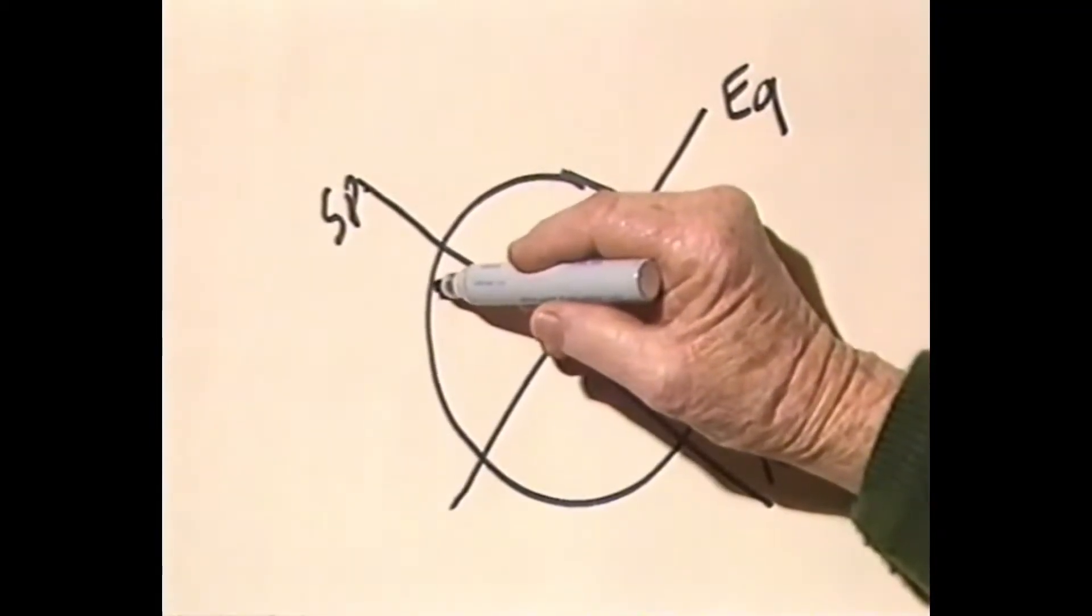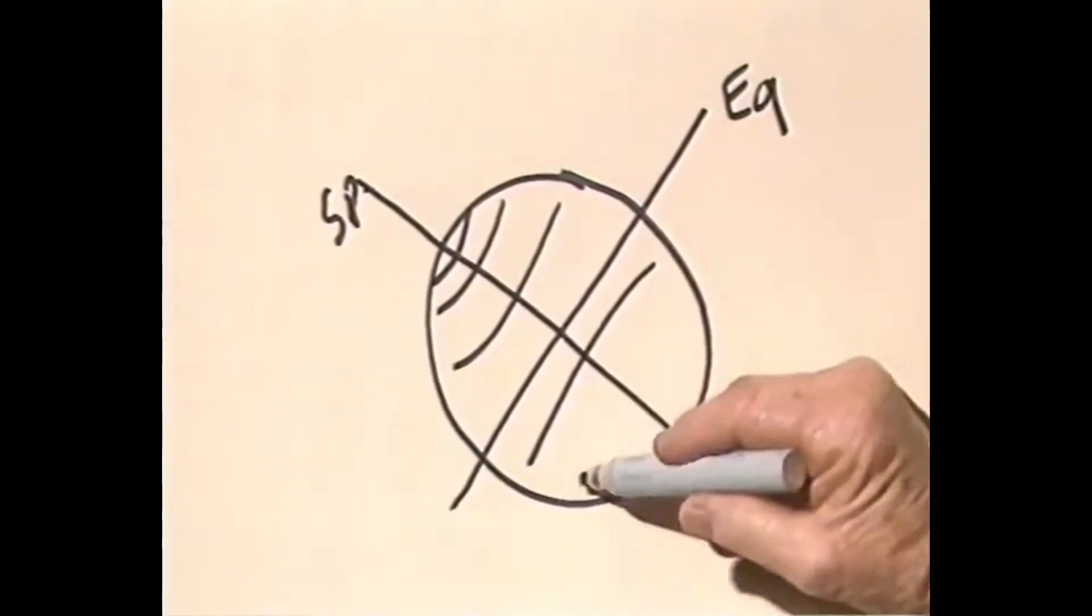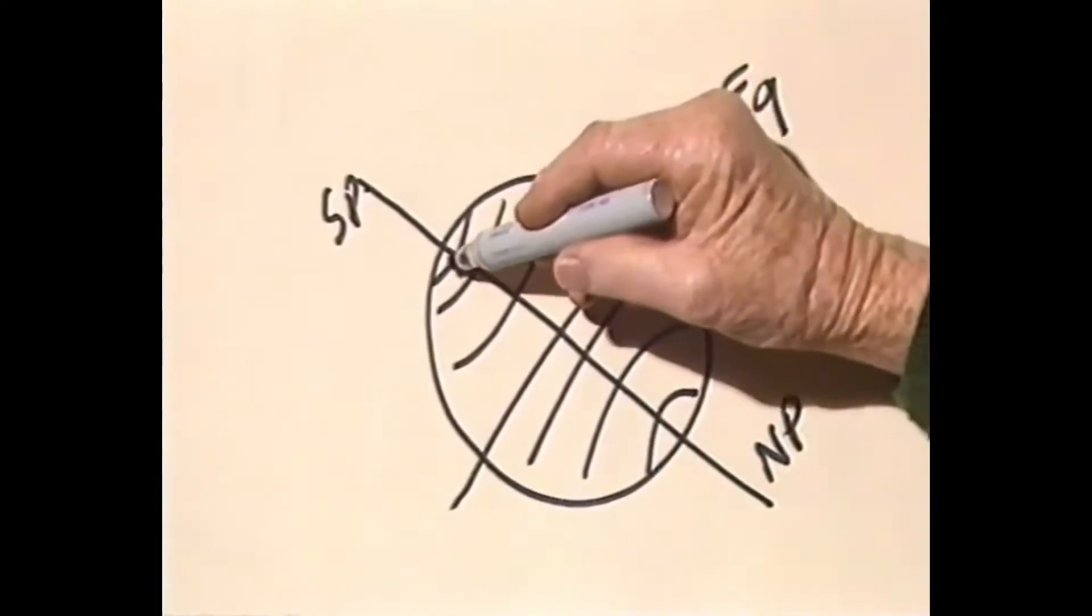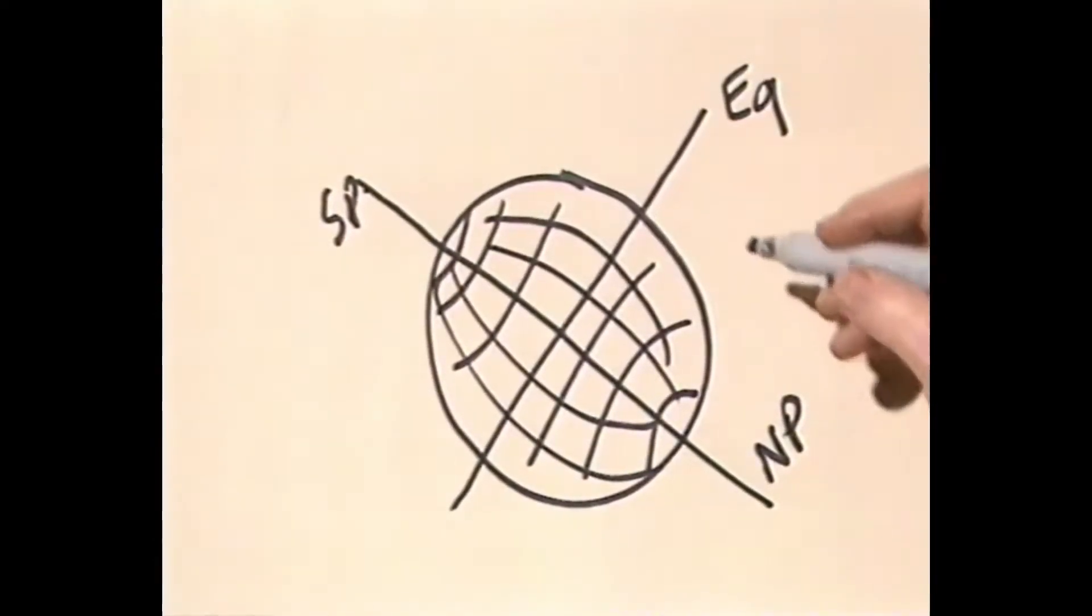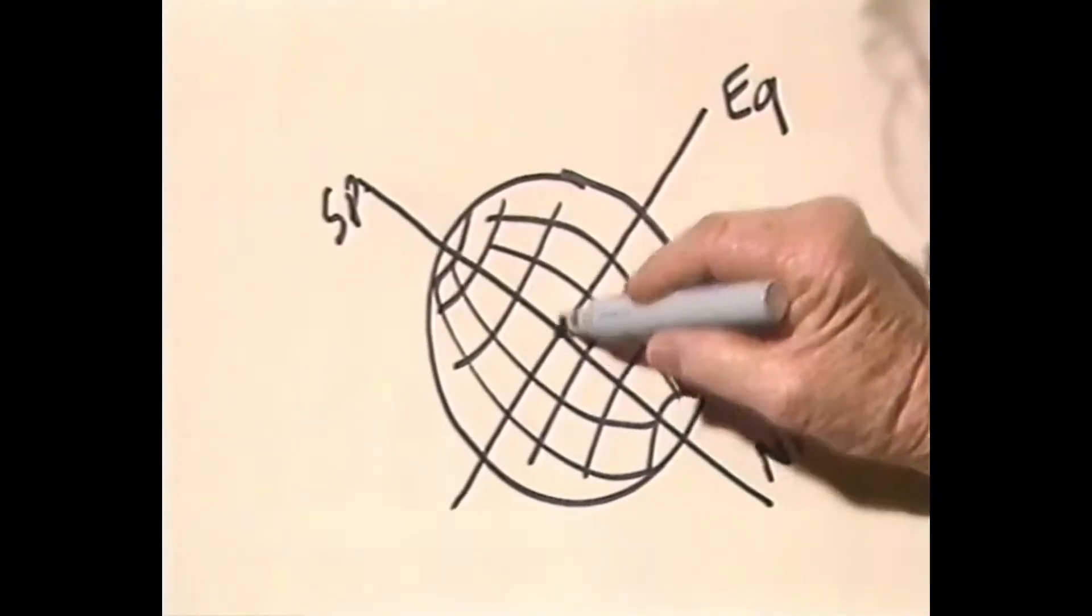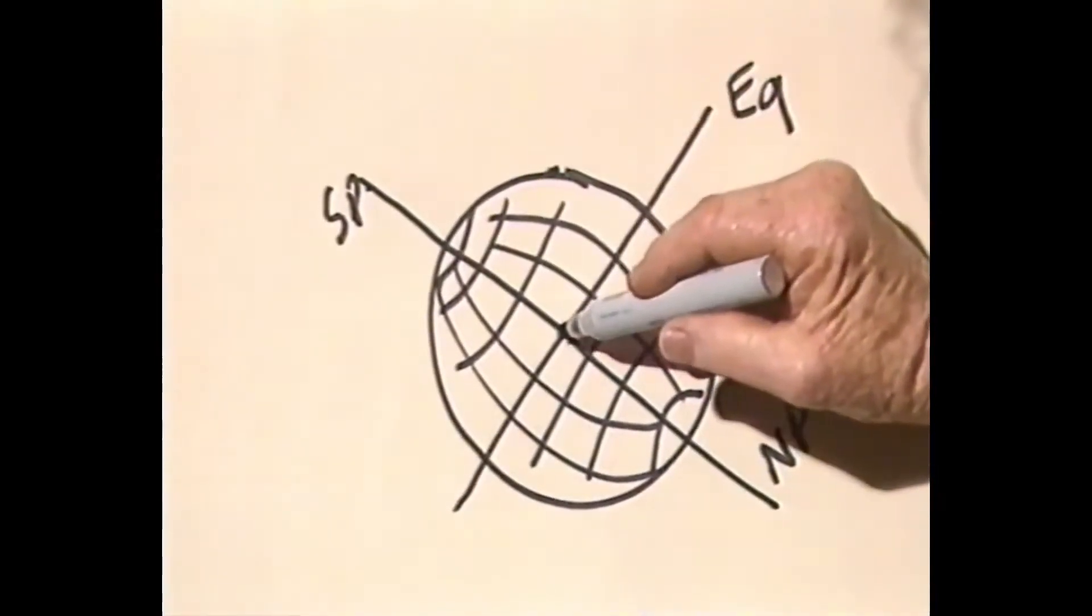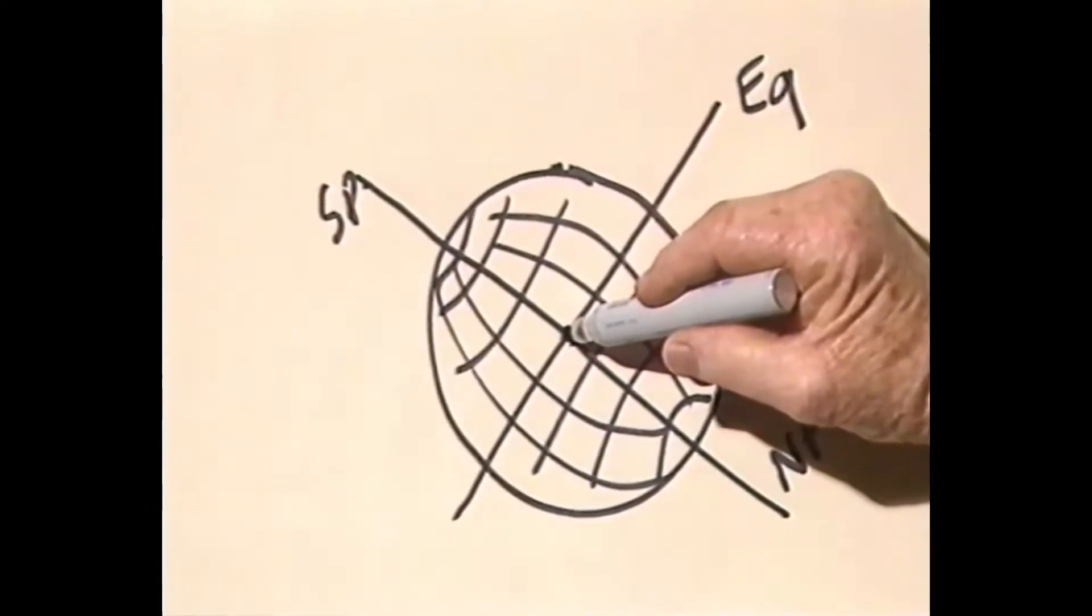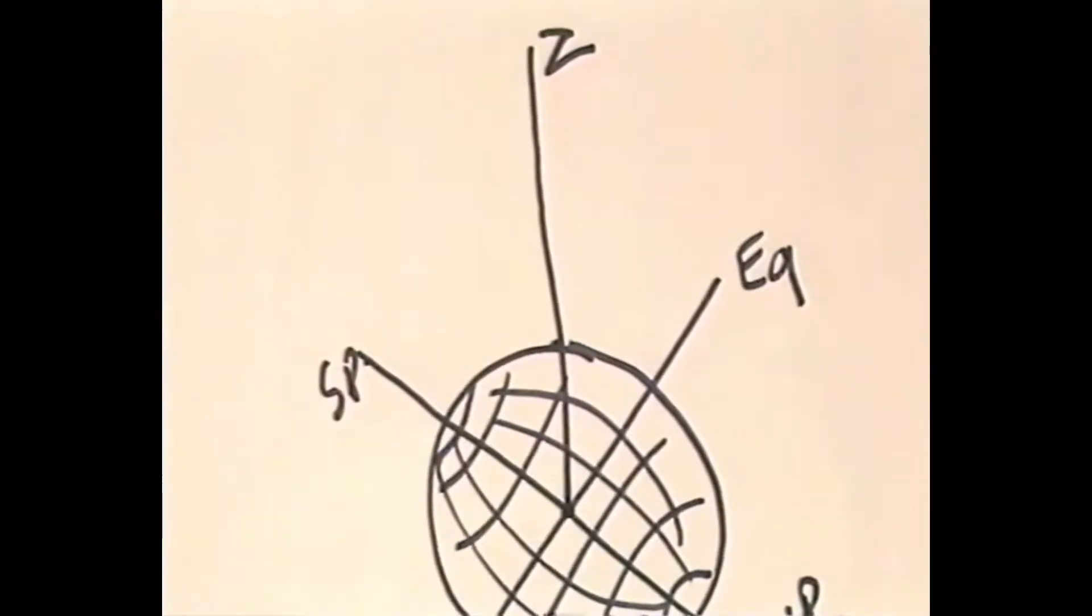The latitude lines go like this, and the longitude lines go like this. The line from the center of the earth - we're standing on the surface of the earth here in the bush - is our zenith, the point straight above our head.